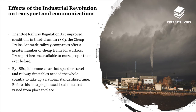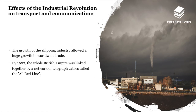The 1844 Railway Regulation Act improved conditions in third class, and the 1883 Cheap Trains Act made railway companies offer more cheap trains for workers, making transport available to more people than ever before. By 1880, speedier travel and railway timetables required the whole country to adopt a national standardised time, replacing local times that varied from place to place. The growth of the shipping industry allowed huge growth in worldwide trade, and by 1902 the whole British Empire was linked by a network of telegraph cables called the All Red Line.